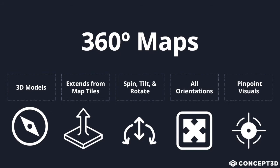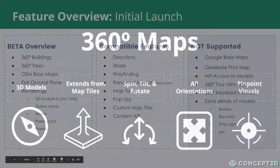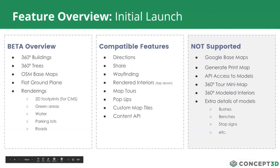This is a brand new feature, so I'm going to pass it over to Jill. She's going to talk to us a little bit about what features are compatible and what is not supported in this initial release. Jumping in before we go into the demo — this is launching in beta currently, and within that beta offering, we are referring to these models that can be spun in every direction as 360 models. We're calling it 360 buildings and 360 trees, and it does need to be on an OSM base map.